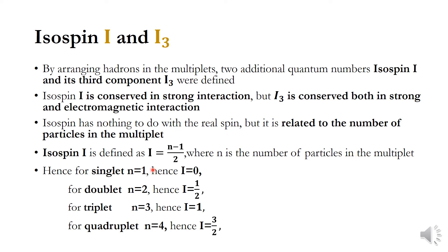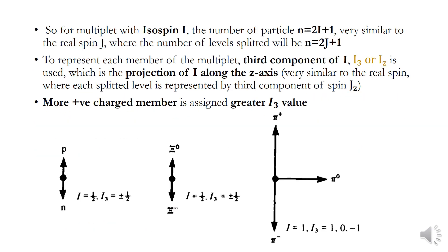For a singlet, n = 1 so I = (1−1)/2 = 0. For a doublet, n = 2 so I = (2−1)/2 = 1/2. For a triplet, n = 3 so I = (3−1)/2 = 1. For a quadruplet, I = 3/2. So for a multiplet with isospin I, the number of particles n = 2I + 1, which is very similar to the real spin j, where the number of split levels is n = 2j + 1.